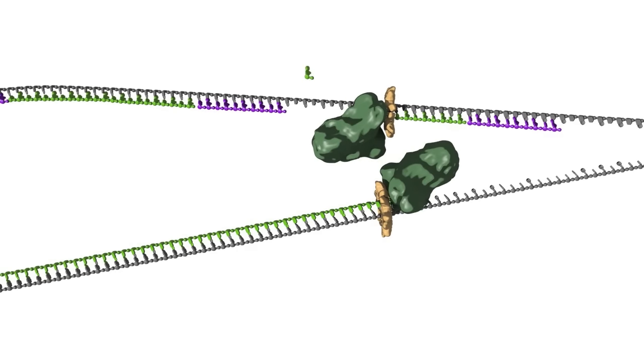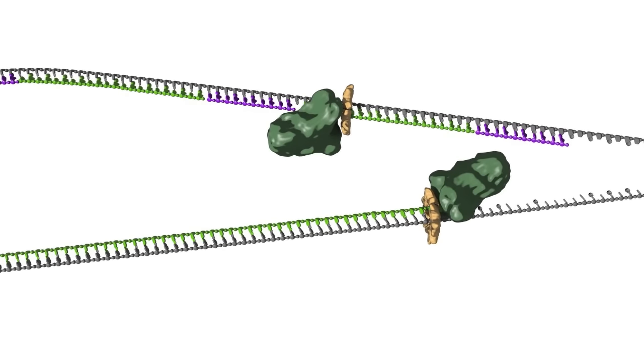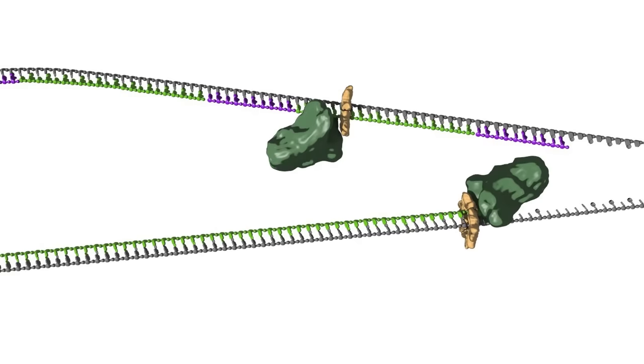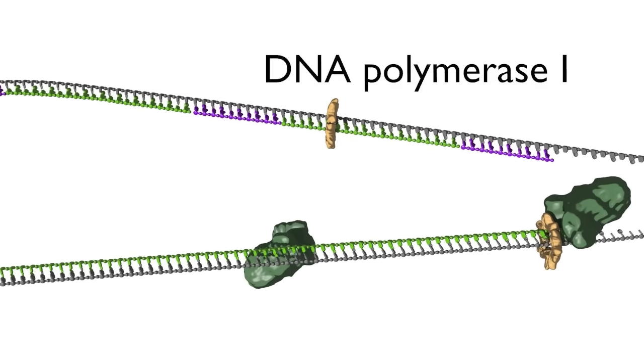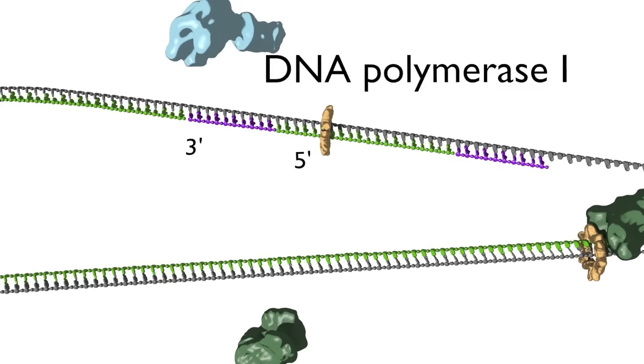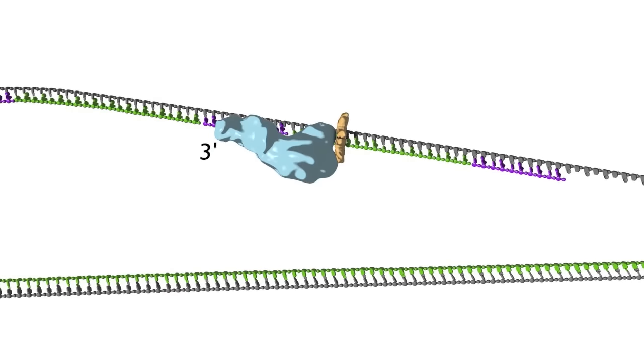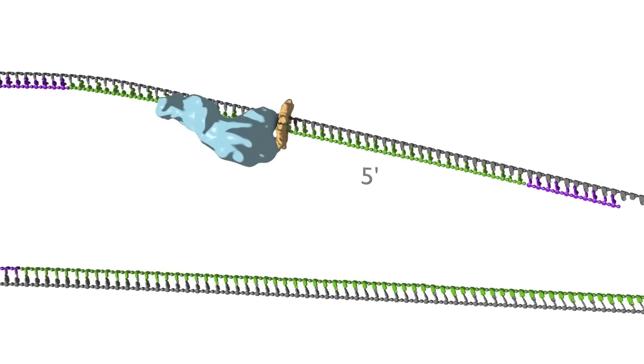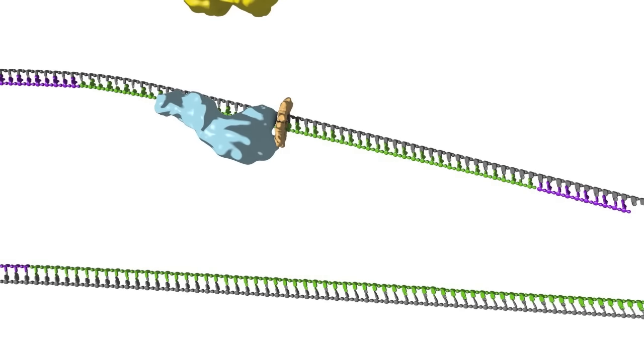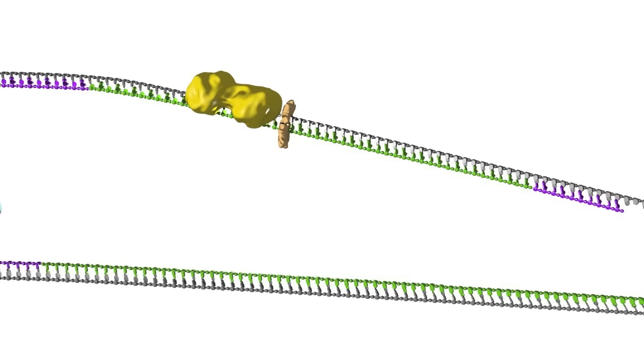When the lagging strand polymerase runs up against a previously made Okazaki fragment while in the process of synthesizing DNA, the replicative DNA polymerase 3 is replaced by DNA polymerase 1, which has five prime to three prime exonuclease activity. This exonuclease then degrades the RNA primer in front of it, synthesizing DNA as it goes. Once the RNA primer is removed, the two sections of DNA are joined by DNA ligase.